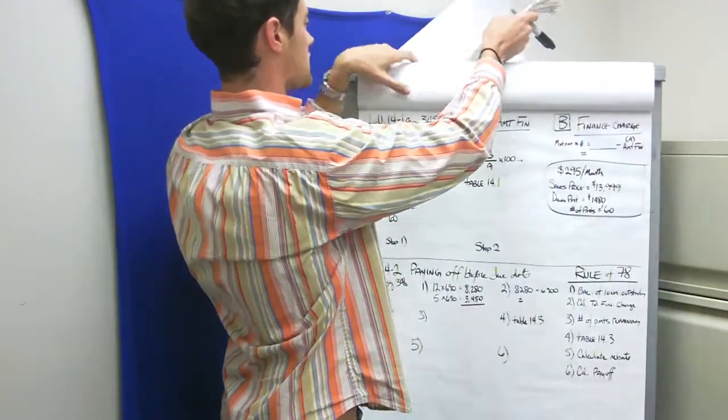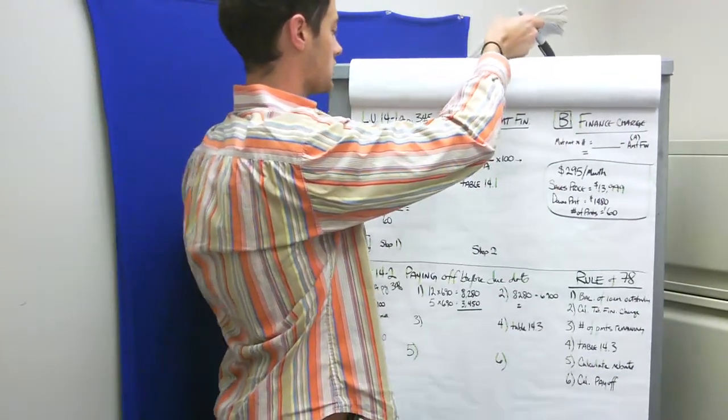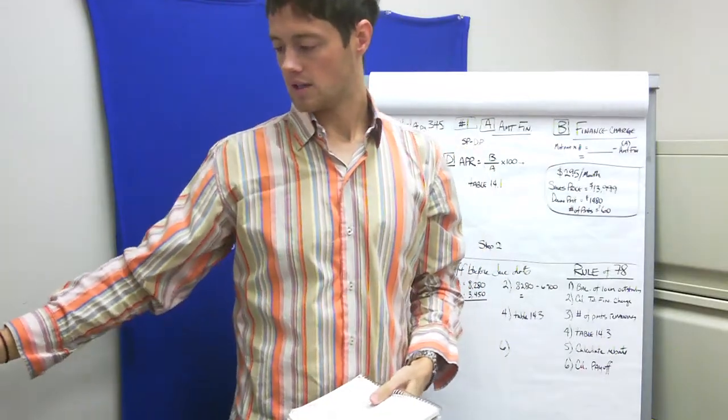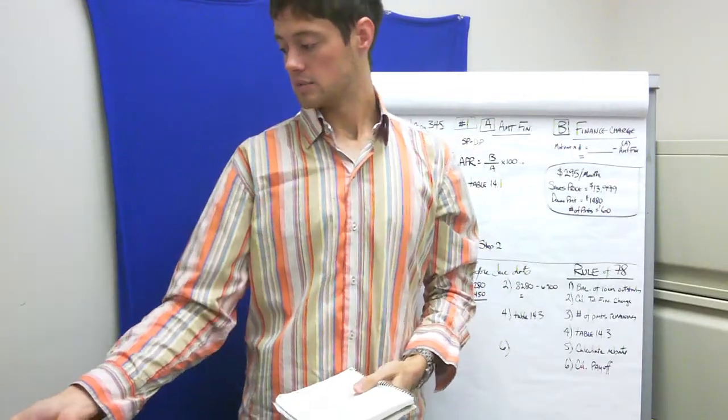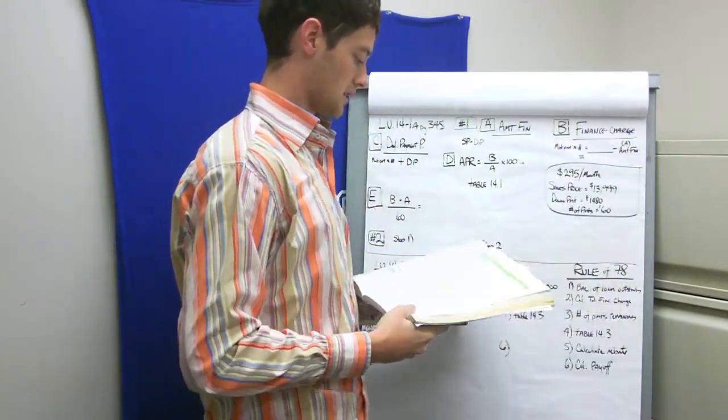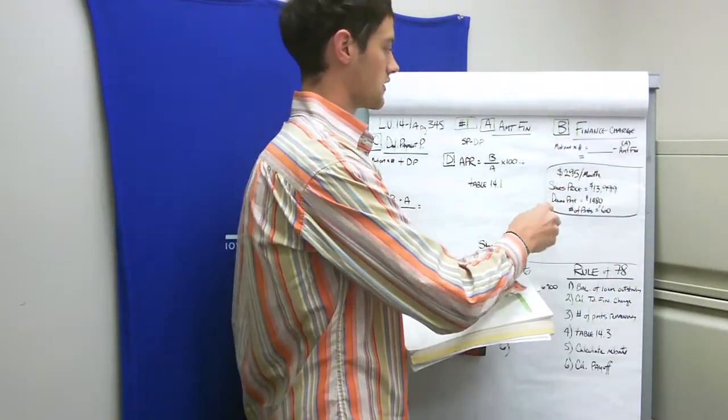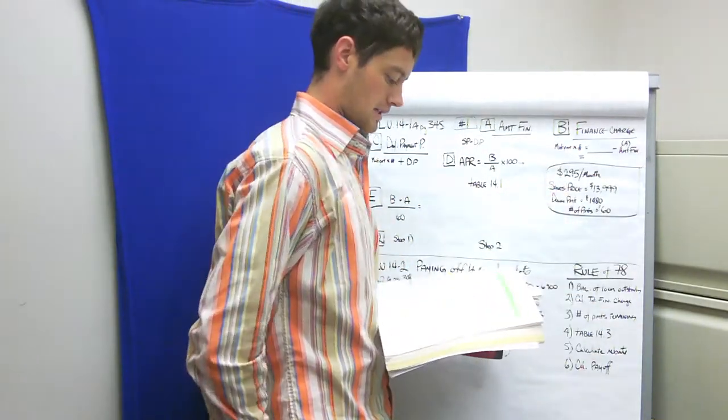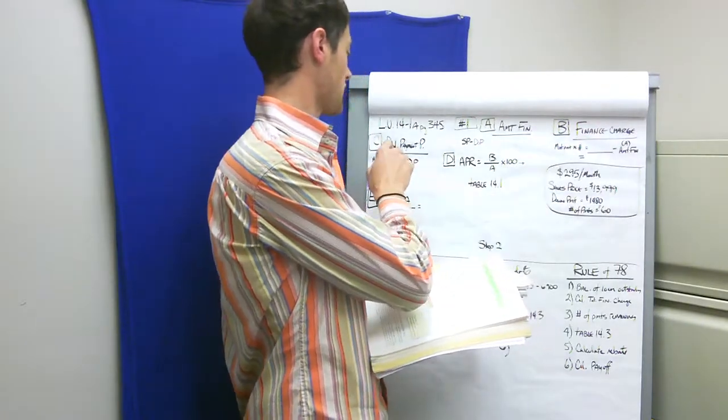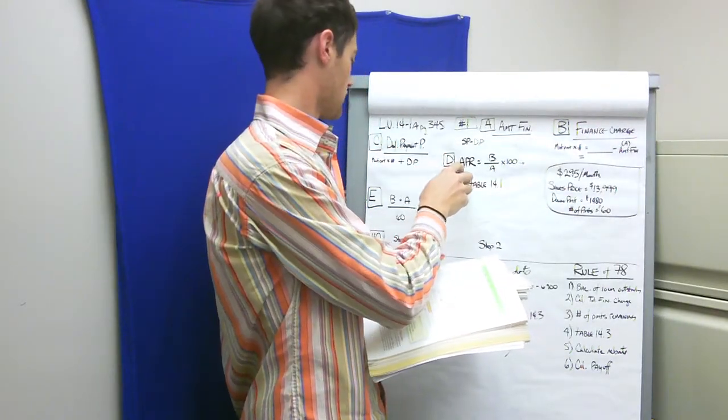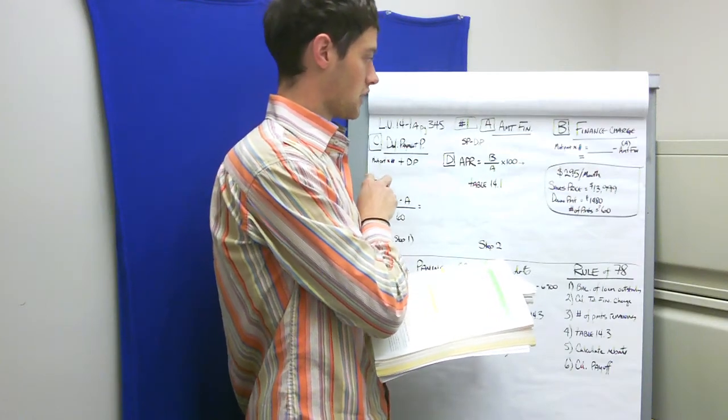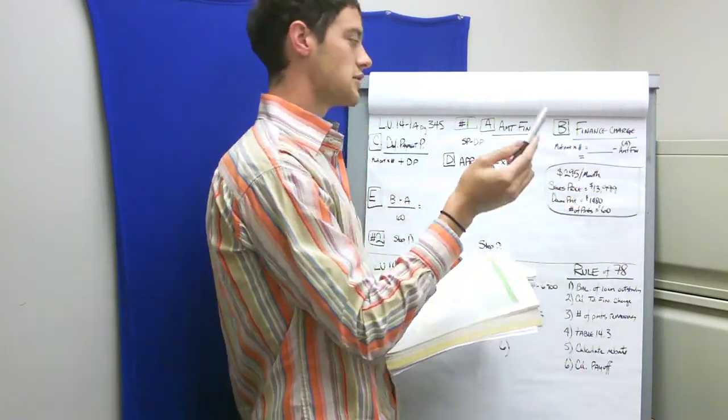I'm looking at page 3.5 in the book, the extra practice problem because the practice problem should be done for you. It says figure out the amount financed, the finance charge, the deferred payment price, the APR, and the monthly payment by formula. So let's do that.